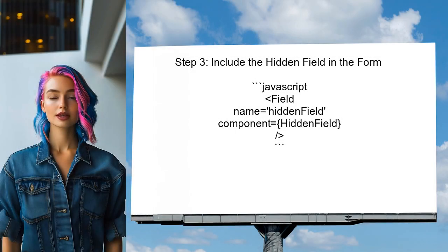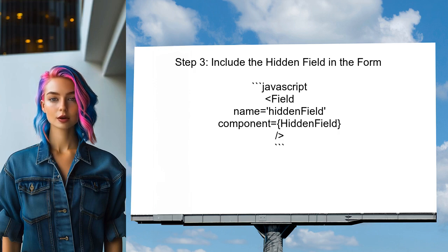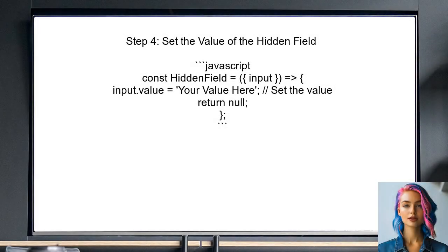After defining the hidden field component, include it in your form. You can do this by using the Field component and specifying the custom hidden field as the component prop. Finally, set the value of the hidden field by using the input props provided by Redux form. This allows the hidden field to store data without being displayed to the user.